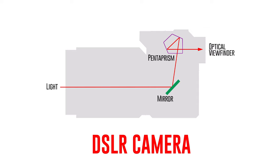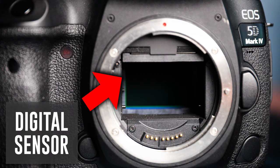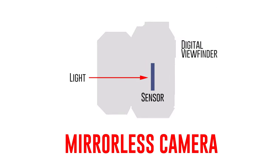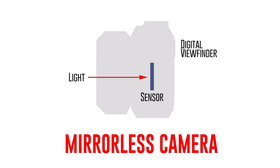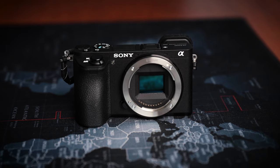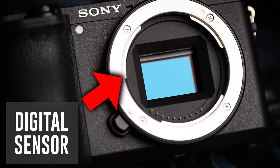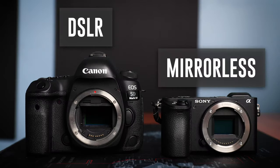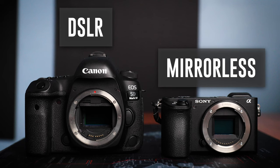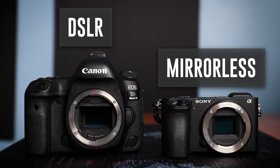When the photographer takes a picture, the reflex mirror flips up to reveal the digital sensor, which then records the image. A mirrorless camera is similar except without the mirror. Light passes through the lens directly onto the digital sensor. The viewfinder is an electronic, digital representation of the image as it hits the camera sensor. The lack of a mirror usually means that mirrorless cameras are lighter and a lot less bulky than DSLRs.